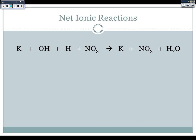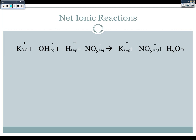Looking at our double displacement reaction: K+ plus OH- plus H+ plus NO3- becoming K+ plus NO3- plus H2O. You'll notice K+ and NO3- both appear as ions on the reactant and product side — they experienced no change, so they are spectator ions and we remove them. Our net ionic equation becomes: OH- aqueous plus H+ aqueous → H2O liquid. Net ionic equations are still balanced — we're just simplifying to show only the things undergoing a change.